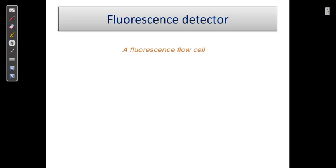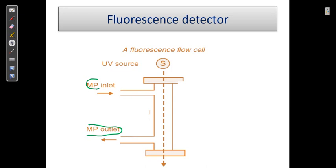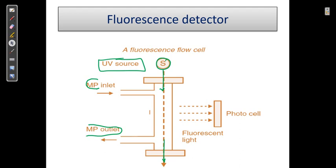Here is the flow cell diagram — this is our tube, our flow cell. Mobile phase enters from one side and exits from the other. A UV light source illuminates the cell; this is monochromatic light passing through the mobile phase.